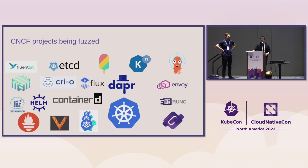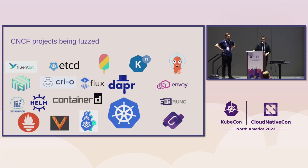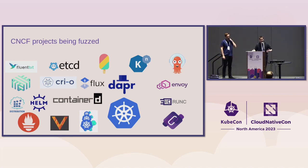Many projects here in CNCF are being fuzzed, including all the ones shown here. Perhaps it's worth mentioning Envoy and FluentBit, because these were some of the early adopters of fuzzing, primarily because they are written in memory-unsafe languages — C and C++. This is usually where fuzzing originates from, because memory corruption issues can have much more severe consequences than, say, uncaught exceptions in Python.